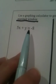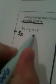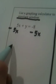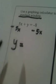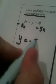5x plus y equals negative 8. If I solve for y by subtracting 5x from both sides, I get y is equal to the opposite of 5x minus 8.